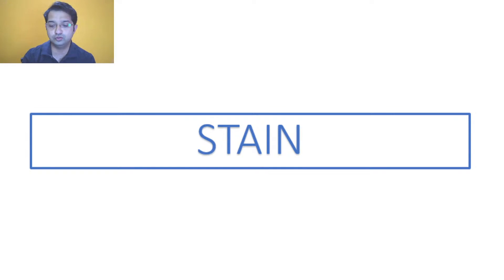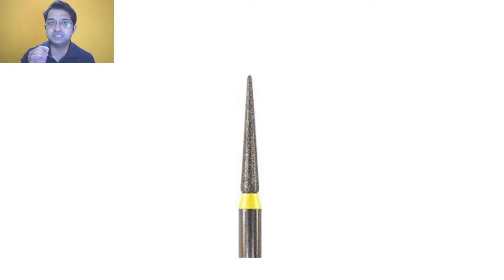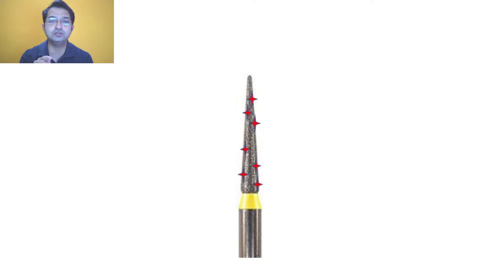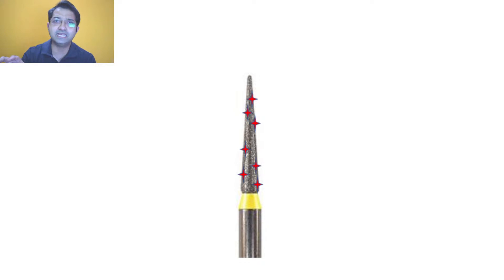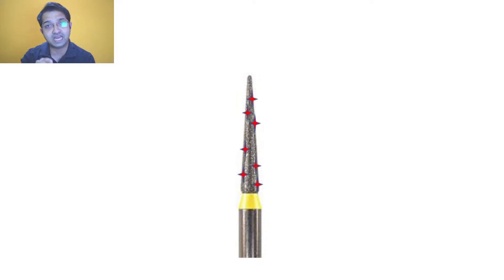Because it is sticky, it can stain — that's why you have to do finishing and polishing with a bur to remove this last layer of oxygen inhibited composite. The problem is that when you try to trim it with a bur, the sticky oxygen inhibited layer can harm your bur because it will get entangled inside the diamond points, reducing both the efficiency and the life of the bur.